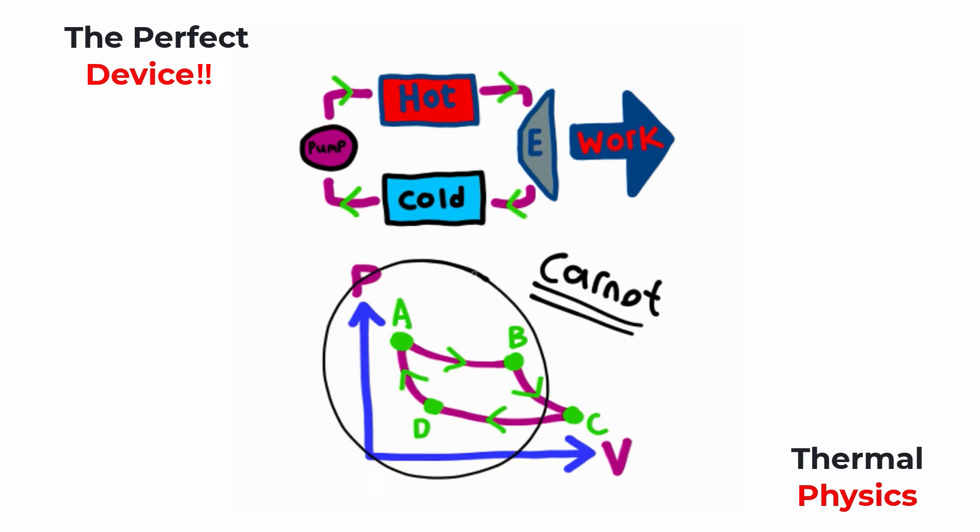Now, the cycle I have listed below here is a diagram with pressure on the y-axis and volume on the x-axis. This is known as a PV diagram, and this describes a Carnot cycle, which is the ideal theoretical cycle of an engine.